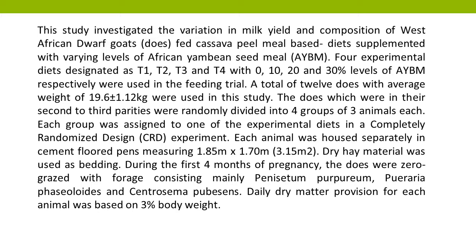A total of 12 does with average weight of 19.6 ± 1.12 kilograms were used in this study. The does, which were in their second to third parities, were randomly divided into four groups of three animals each. Each group was assigned to one of the experimental diets in a completely randomized design (CRD) experiment. Each animal was housed separately in cement floor bins measuring 1.85 m × 1.70 m (3.15 square meters).